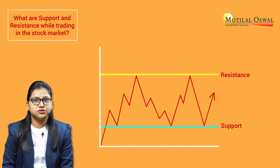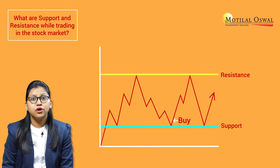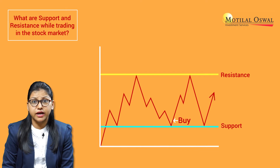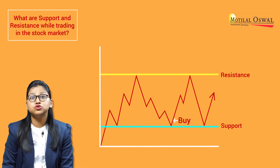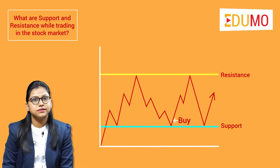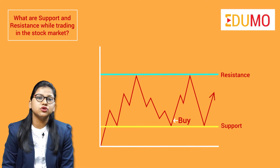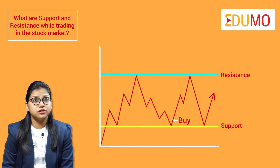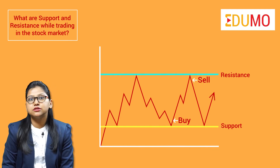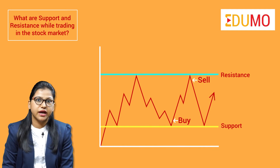Support helps the trader to enter into the trade when the stock prices bounce back from the support level. Resistance, on the other hand, helps the traders to exit and sell the stock when the prices are at this level.